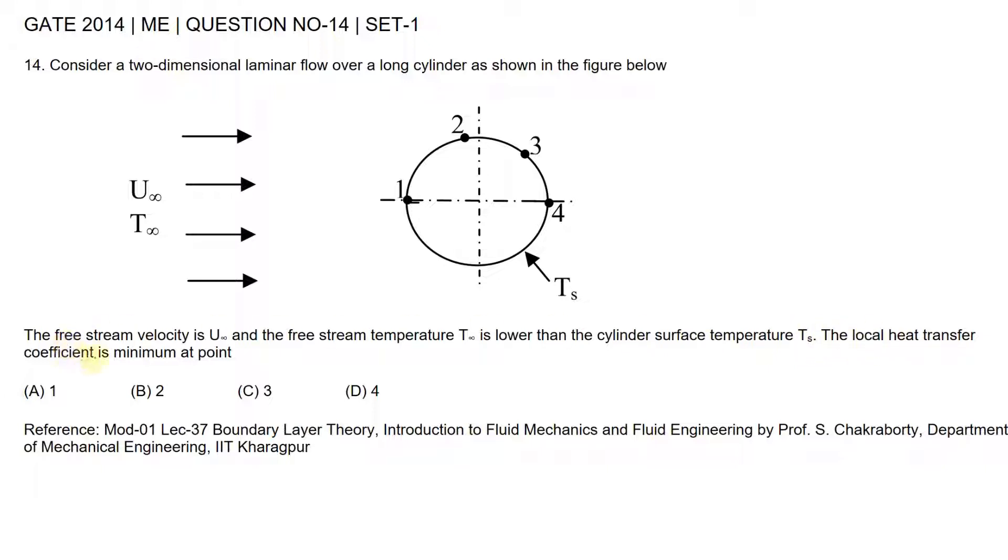The local heat transfer coefficient is minimum at point. So it is given that the flow is laminar. Okay, so for laminar flow, the heat transfer coefficient H is inversely proportional to the boundary layer thickness.